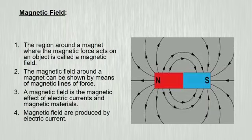Now observe the iron filings. The magnetic field around a magnet can be shown by means of magnetic lines of force. A magnetic field is a magnetic effect of electric current and magnetic material. Magnetic fields are produced by electric current. The magnetic field at any given point is specified by both direction and magnitude.